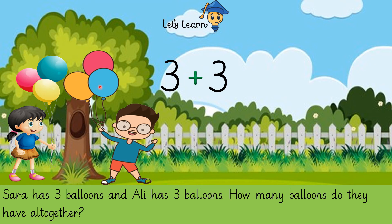Three balloons of Sara and three balloons of Ali — how many balloons do they have altogether? Put an equals-to sign and count them all together: one, two, three, four, five, six. The answer is six — there are six balloons altogether.